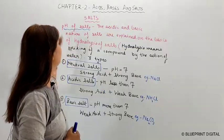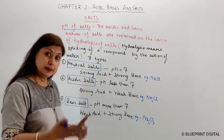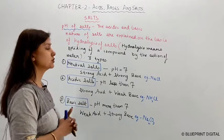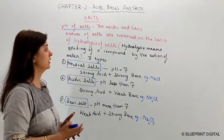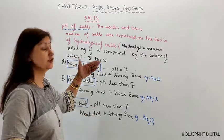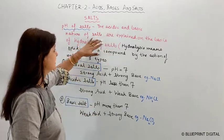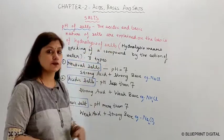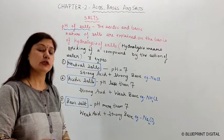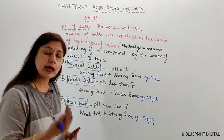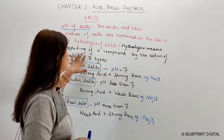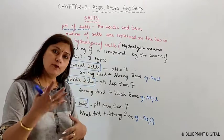Next: the pH of salts. Salts also have a pH. First, we will identify the acidic and basic nature of salts through hydrolysis. What is hydrolysis? Hydrolysis means the splitting of a compound by the action of water. When we add salt to water, it splits into ions and we can observe whether it shows acidic or basic nature.